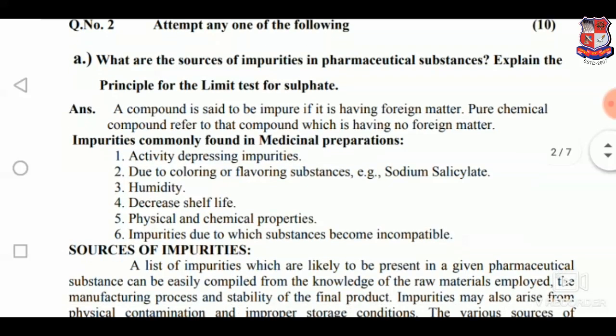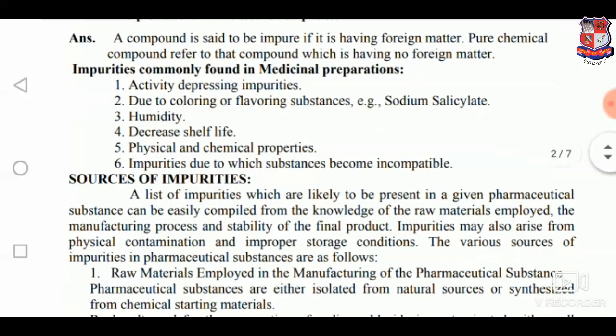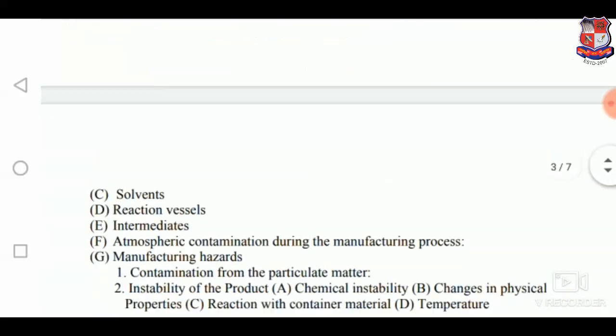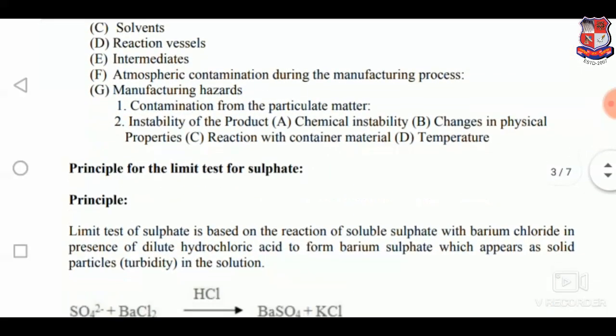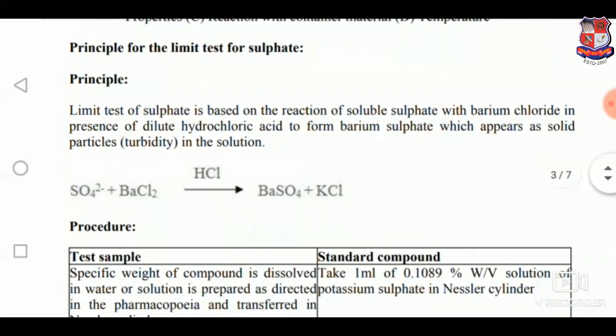What are the sources of impurities in pharmaceutical substances? Explain the principle and limitations for the sulfate test. These are the sources of impurities, and this is the principal test for sulfate.